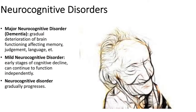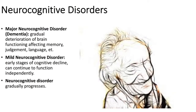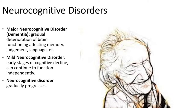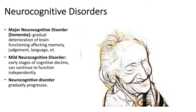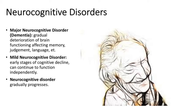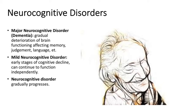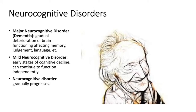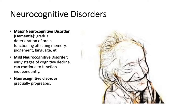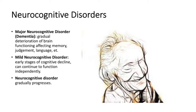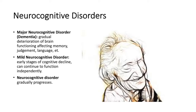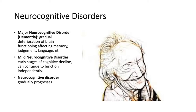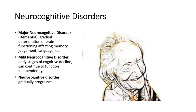Major neurocognitive disorders include dementia, which is the gradual deterioration of brain functioning affecting memory, judgment, and language. There are also mild neurocognitive disorders, which are merely the early stages of cognitive decline, and individuals can continue to function independently. These neurocognitive disorders gradually progress over time.